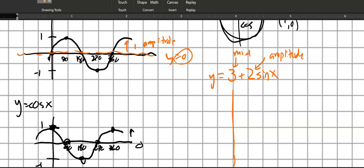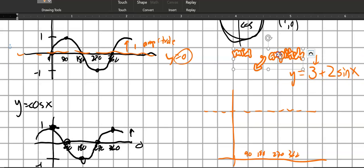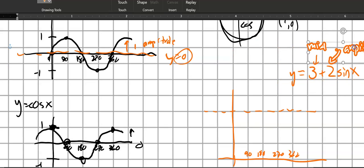So if I go to sketch that, here's my 0. And I'll put same 90, 180, 270, 360. My midline's at 3. So it's been shifted up 3. 1, 2, 3. So there it is right there. It's been stretched by 2, so it's going to get all the way up to here and all the way down to there. And now since it's sine, I know that sine starts at the midline and goes up. So it starts at the midline, up, back down, back up.